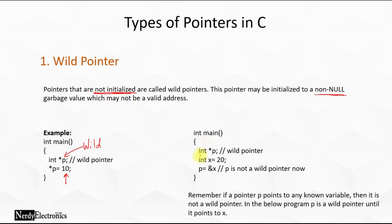Now let us consider another example. We have a pointer 'int *p'. When we write 'int x = 20', we are declaring another variable x equals to 20. Now at this point p is a wild pointer. But now we are assigning 'p = &x'. So once we assign a value to p, p is no longer a wild pointer.